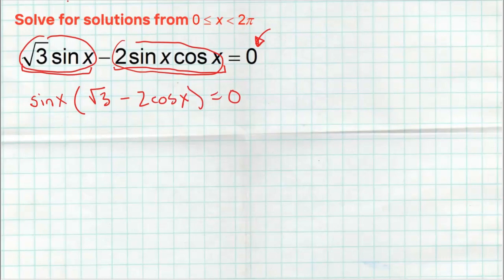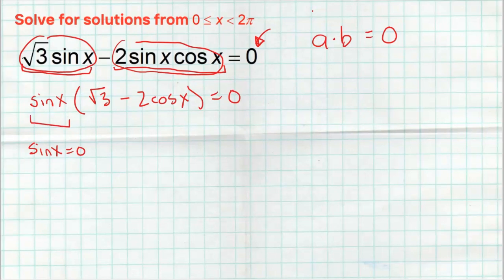Now that I've factored, I'm going to use the zero product property, which says if you have something times something else equal to zero — a times b equals zero — then a equals zero or b equals zero. So sine of x could equal zero, because if this part is zero, it doesn't matter what the second part is. Or the radical three minus two cosine of x could equal zero, because if that back part is zero, the whole product is zero.